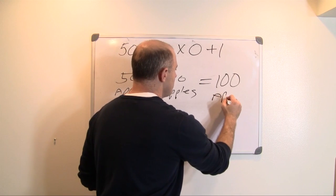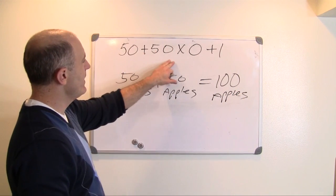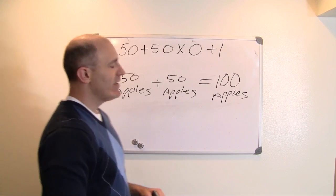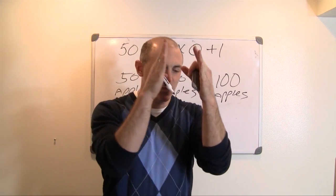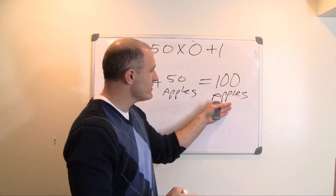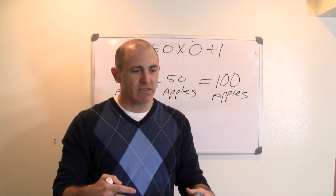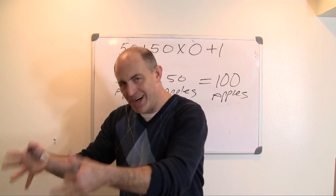So, we have 100 apples. Now, you say, times 0. Well, anything times 1, 100 apples times 1, is just 100 apples, because you have 1 of it.